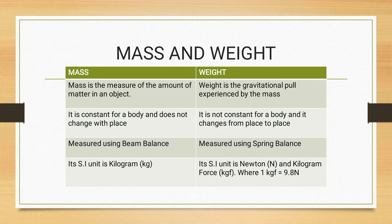The third difference is that mass is measured using a beam balance, and the spring balance is used to measure the weight of the object. And the last difference is the SI unit.